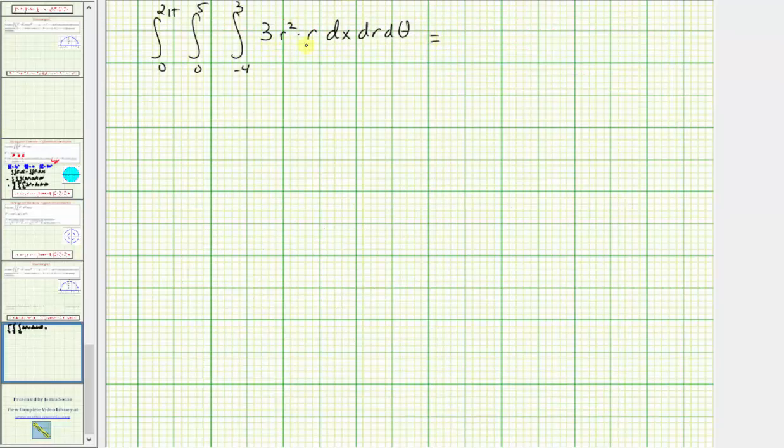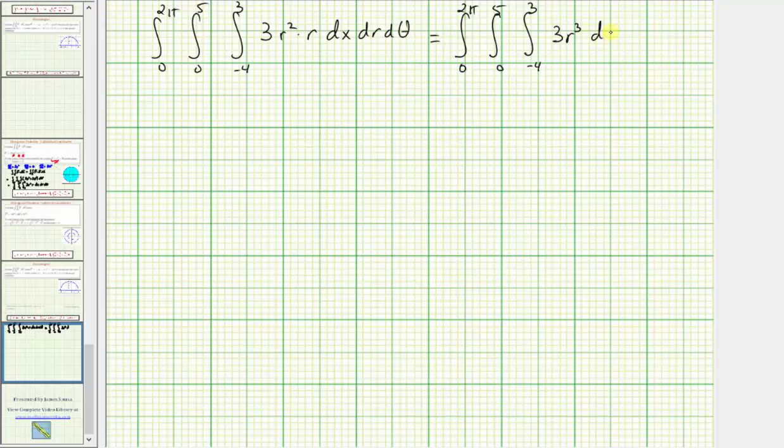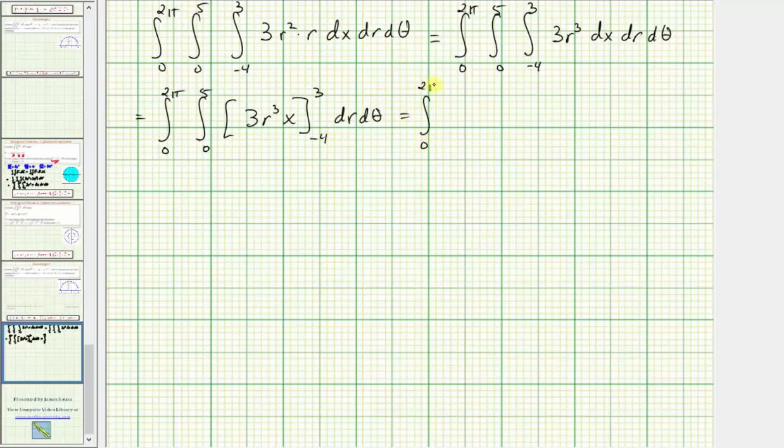Let's go and evaluate this on the next slide. Of course, we can write the integrand function here as 3r³. So we first integrate with respect to x treating r as a constant. So we'd have 3r³x, performing substitution for x when x is 3.